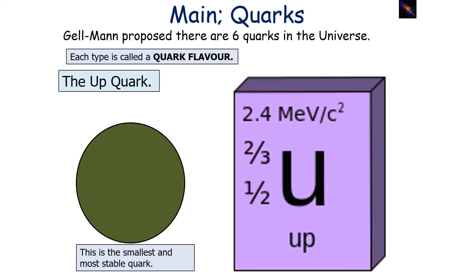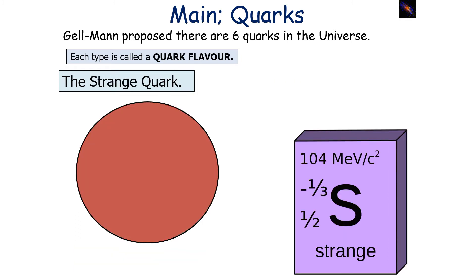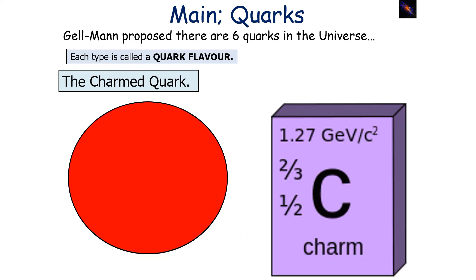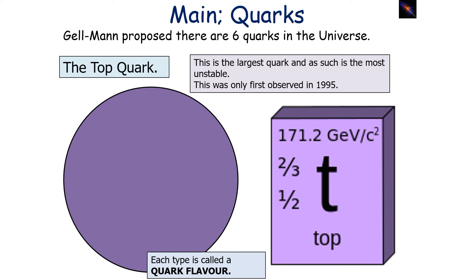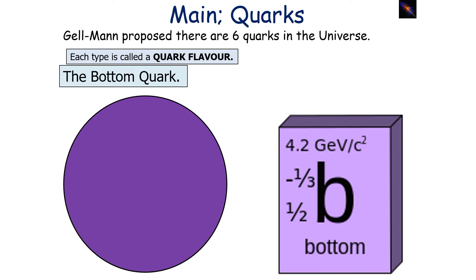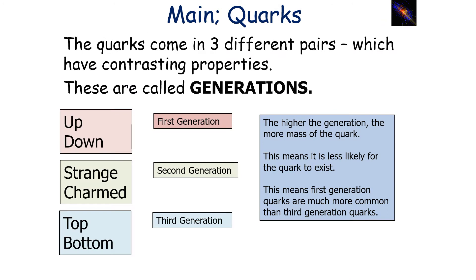Gell-Mann proposed there are six quarks in the universe, and each type is called a quark flavour. You've got the smallest and most stable quark, the up quark; the down quark; the strange quark, which gives a particle the strangeness property; the charmed quark; the top quark, which is the largest and most unstable quark, first observed in 1995; and finally the bottom quark. These quarks, along with leptons and bosons, produce everything in the universe — what we call the standard model of matter. The quarks come in three different pairs with contrasting properties, called generations.